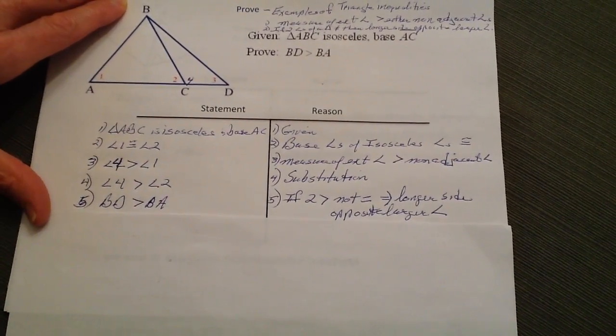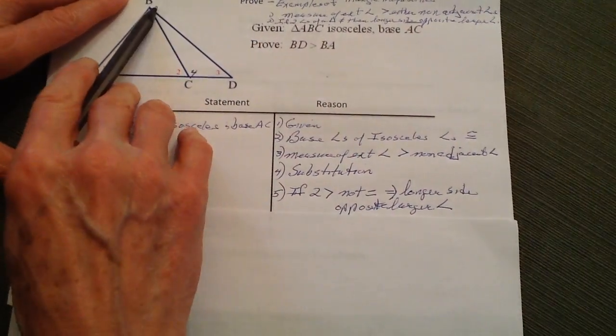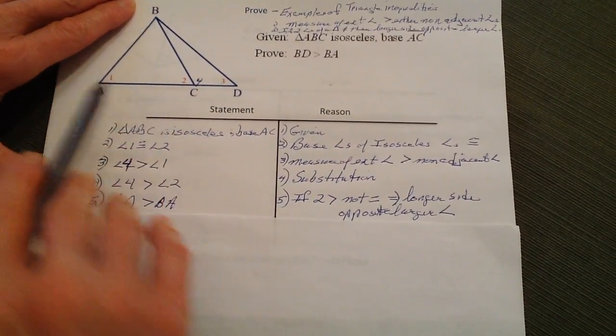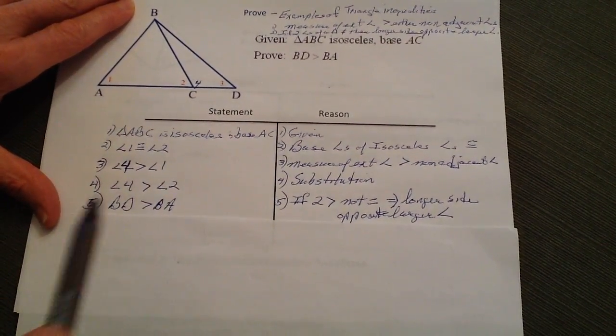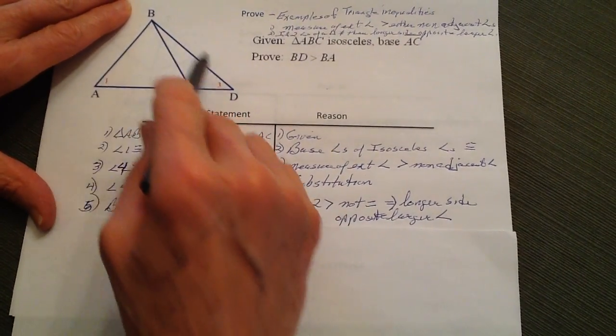Now I can come down to the conclusion here that we made the proof that BD is longer than BA. And the reason I know that is because angle four, the side opposite angle four is BD.